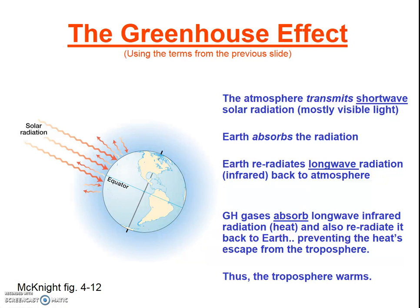Consider pausing the video and going through those steps again — this is very important. Next, I want to dispel two common errors. First, greenhouse gases are not trapping solar radiation from the Sun; remember, the shortwave radiation is transmitted through the atmosphere. Second, greenhouse gases are not trapping radiation that's simply reflected off the ice and water of the Earth. That reflected radiation is still shortwave radiation, and it's transmitted right through the atmosphere. It's only the longwave radiation emitted from the Earth that is trapped by the greenhouse gases.